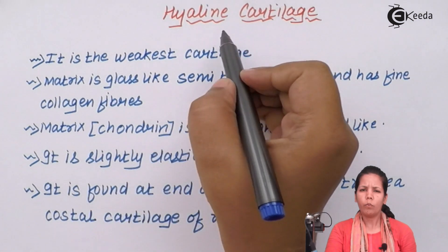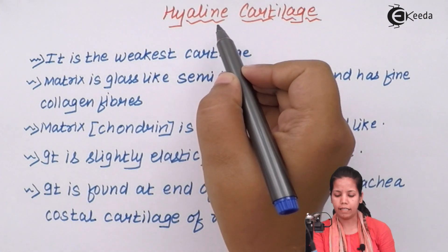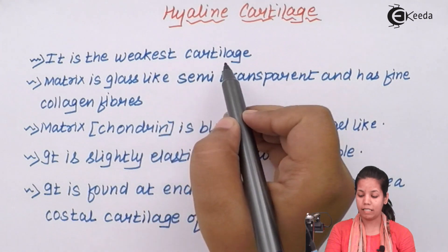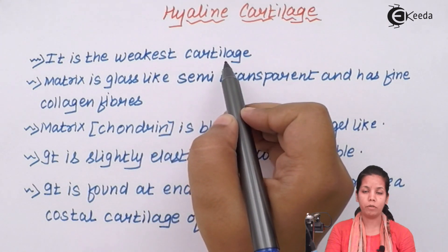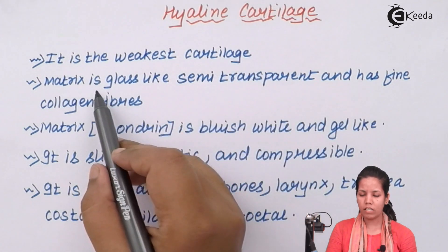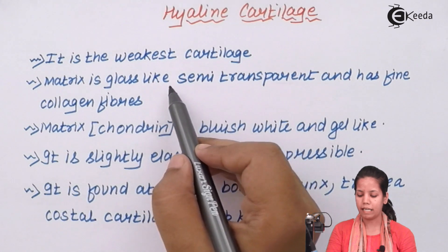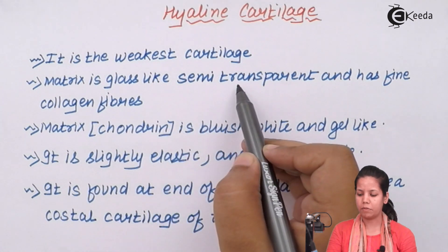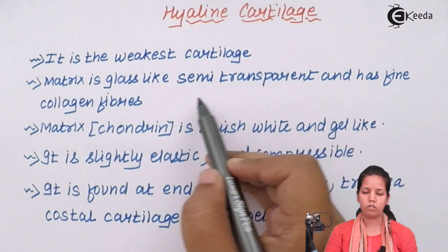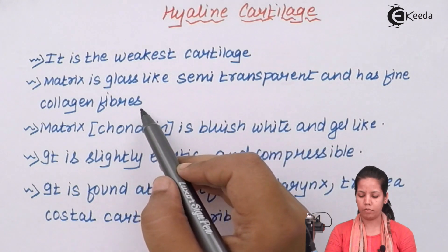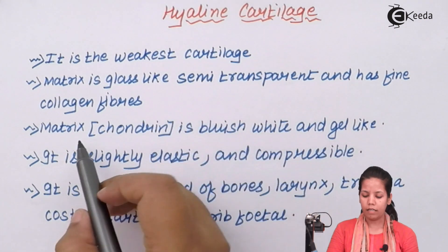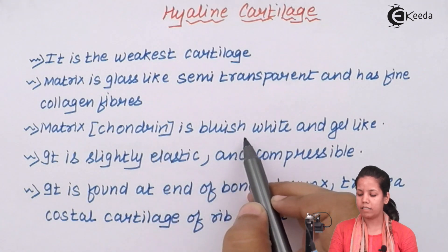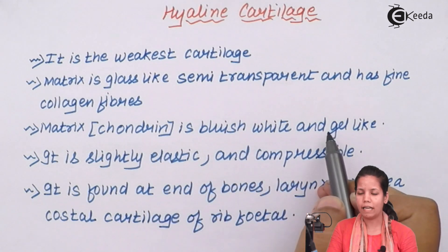Now, as we were going through hyaline cartilage, we also know that this is the weakest cartilage present inside human beings. Its matrix or grounding substance is basically glass-like and semi-transparent, and has fine collagen fibers or yellow fibers. Its matrix is always bluish-whitish and a jelly-like substance.